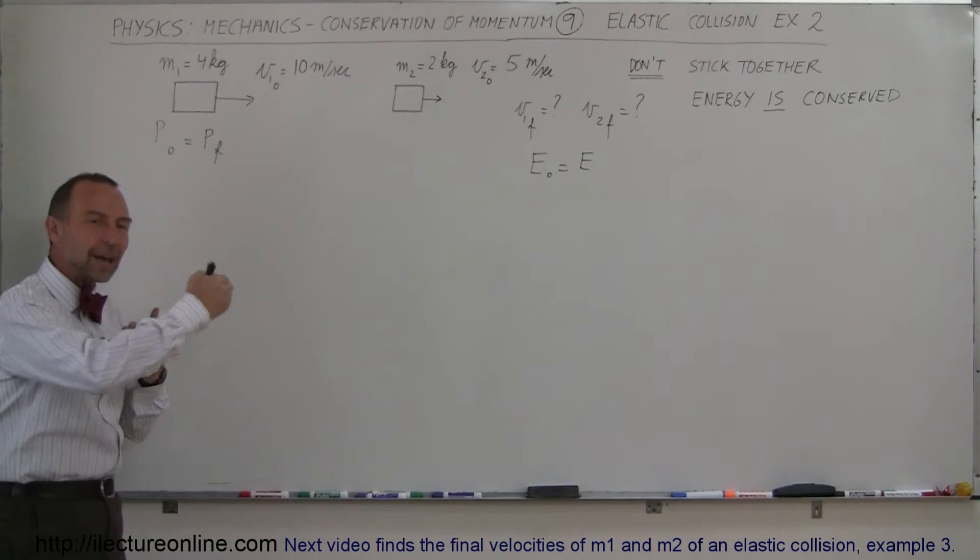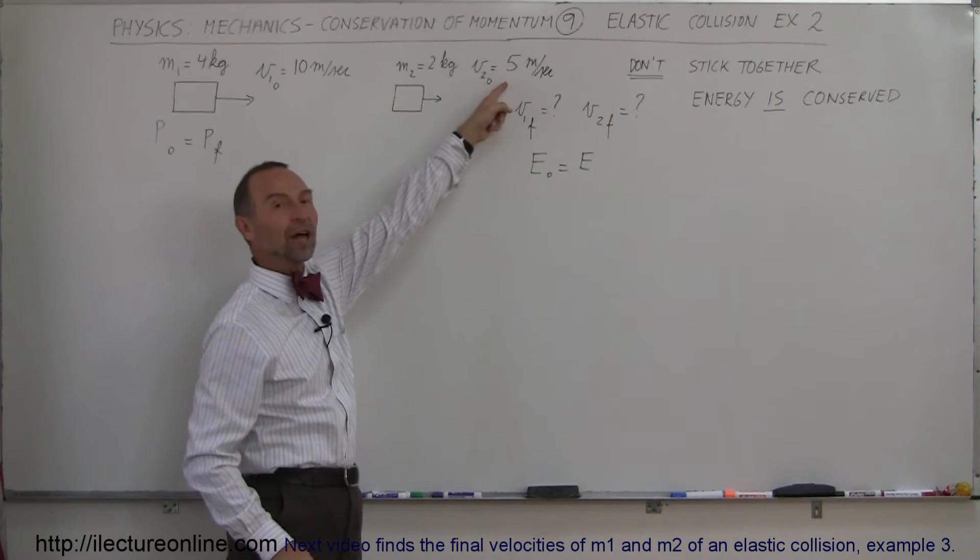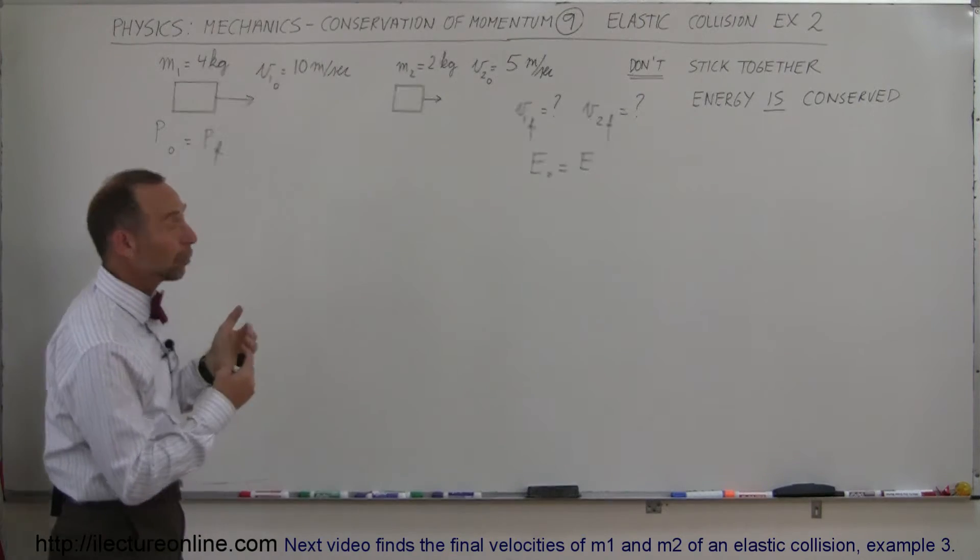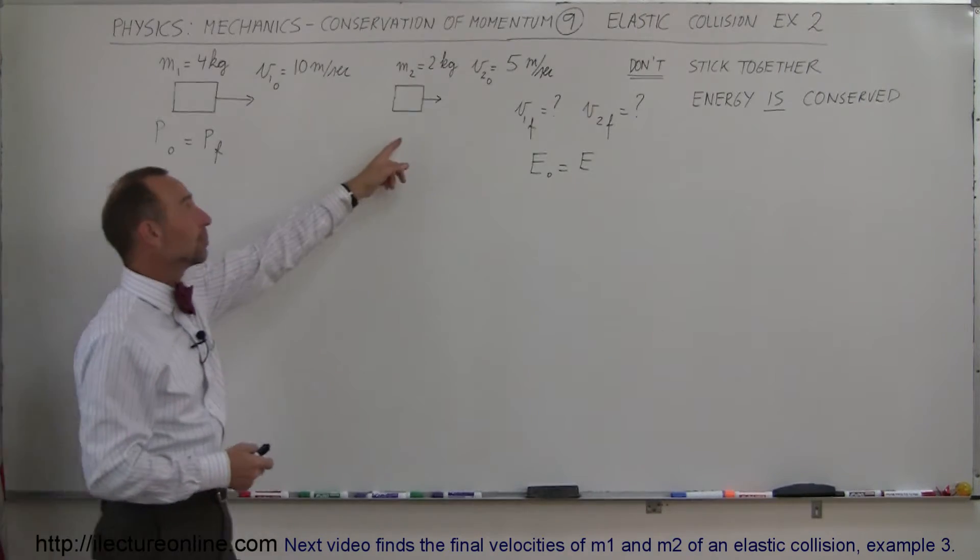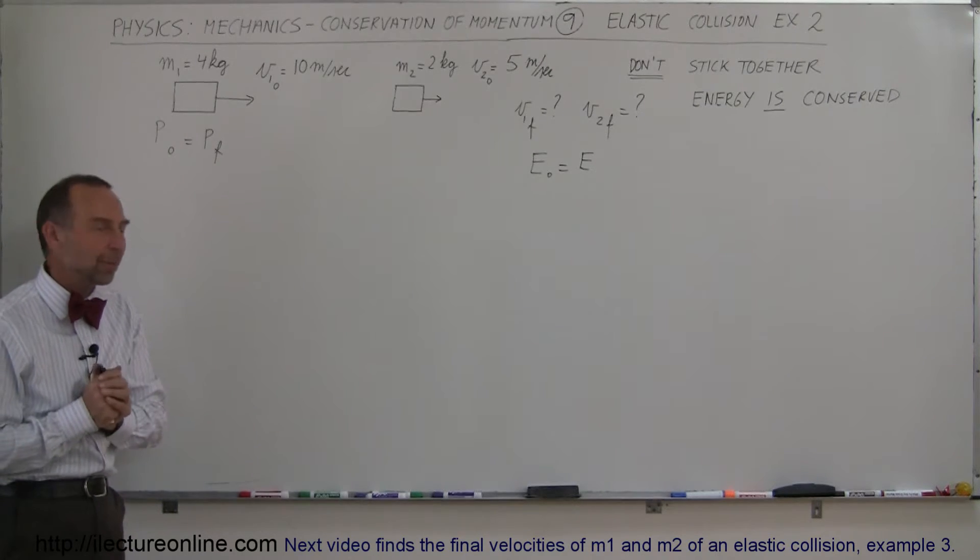The reason why we're doing several of these examples, one after the other, where the first one we started out by having zero velocity for the second object, now we're going to do the same problem, but now this object will have initial velocity of 5 meters per second and see how that changes the problem.